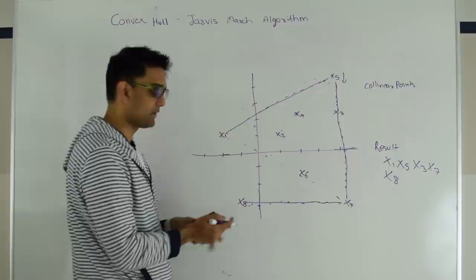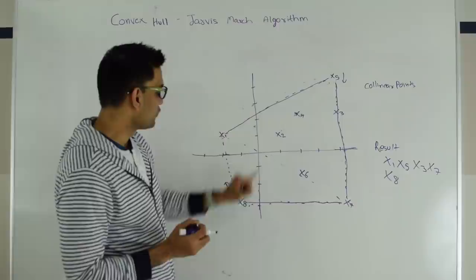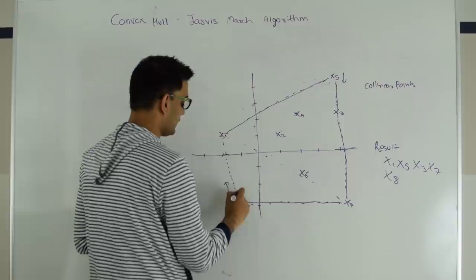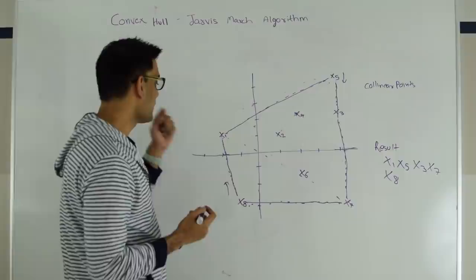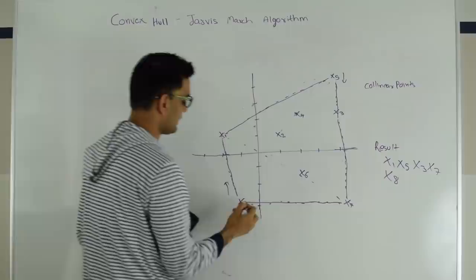Finally we repeat the same process from X8's perspective. The first candidate is X1. X2, X3, X4, X5, X6 and X7 are all on the right side looking from X8 towards X1. So we make X8 to X1 a permanent line. We have now reached our starting point X1, which means we have found our boundary points: X1, X5, X3, X7, X8, and back to X1.